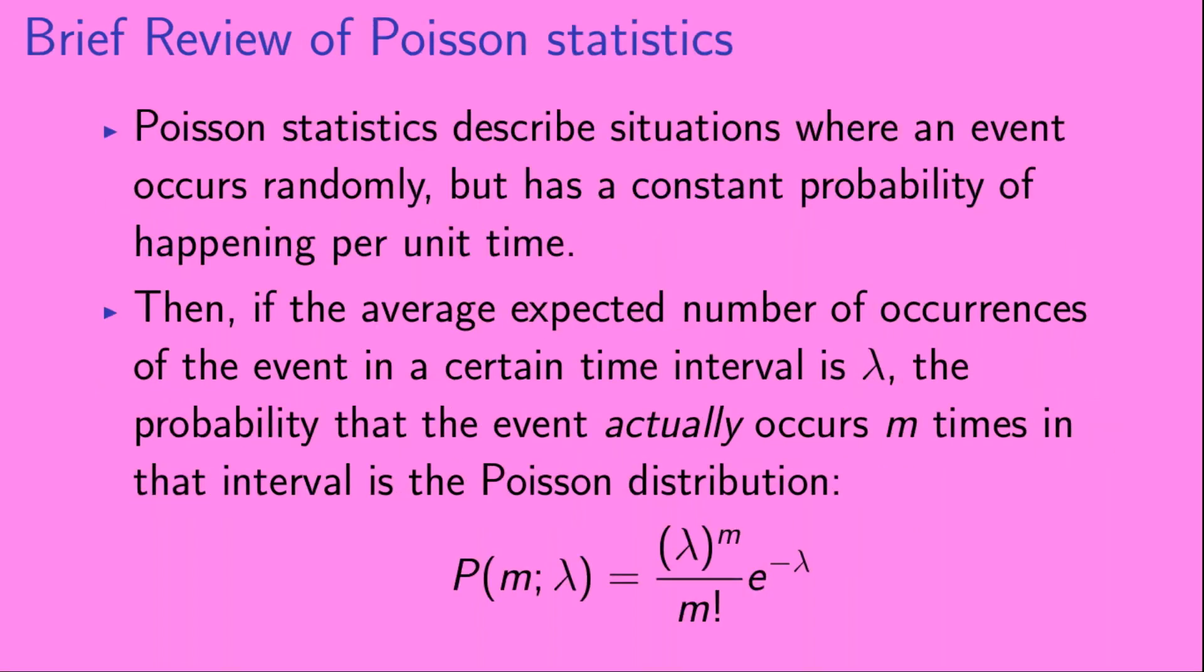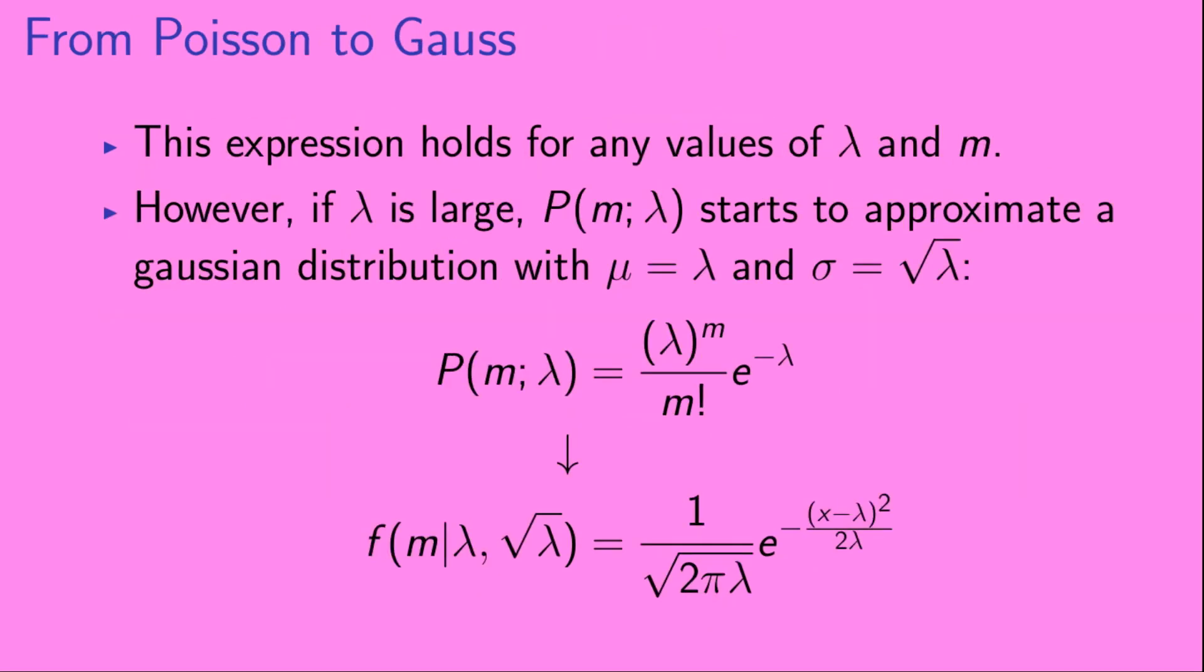Poisson statistics describe situations where an event occurs randomly, but has a constant probability of happening per unit time. Then, if the averaged expected number of occurrences of the event in a certain time interval is lambda, the probability that the event actually occurs m times in that interval is given by the Poisson distribution, shown here. Now, that expression holds for any value of lambda and any value of m. However, if lambda is large, the Poisson distribution starts to approximate a Gaussian distribution that has mu equal to lambda and sigma equal to the square root of lambda. So, our Poisson distribution basically turns into a Gaussian distribution.